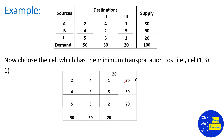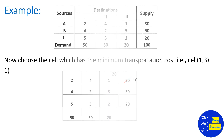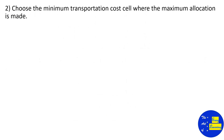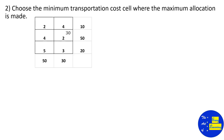In the first row, 30 minus 20 gives a remaining value of 10. Now reduce the table and choose the least cost value. The least cost value is 2, but there is a tie between cell (1,1) and cell (2,2). We have to choose the cell arbitrarily where the maximum allocation is made. In the first row we can allocate only 10, but in the second row we can allocate 30 out of 50, so we choose cell (2,2).